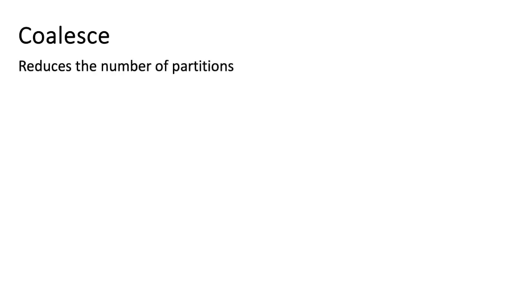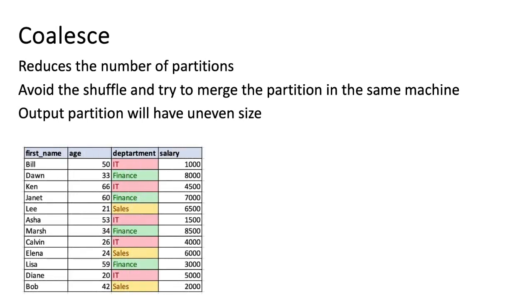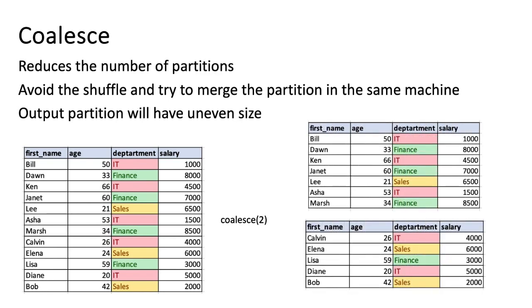Now let's see what the coalesce function is. The coalesce function is used to reduce the number of partitions. It avoids the shuffle and tries to merge the partitions on a single machine. Because of this, the partitions might be of uneven size, which leads to data being skewed. For example, with coalesce(2), we get the data partitioned into two, but the order of the data is the same as in the source, because coalesce avoids data shuffle. Coalesce may lead to uneven size partitions — partition one is slightly bigger than partition two.